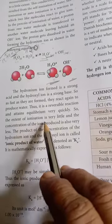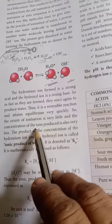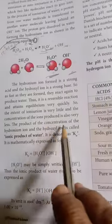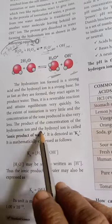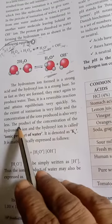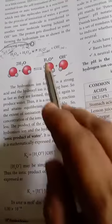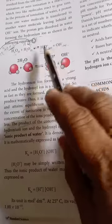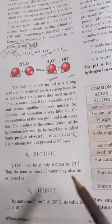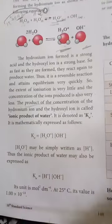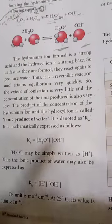The extent of ionization is very little and the concentration of the ions produced is also very less. The product of the concentration of the hydronium ion and the hydroxyl ion is called ionic product of water. It is defined as the ionic product KW.